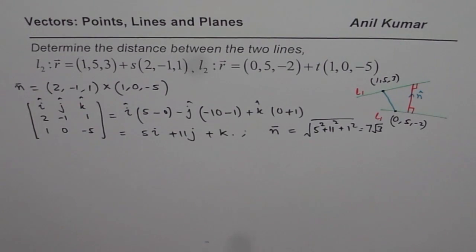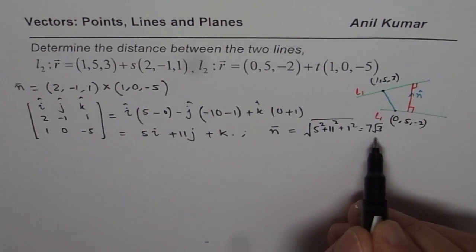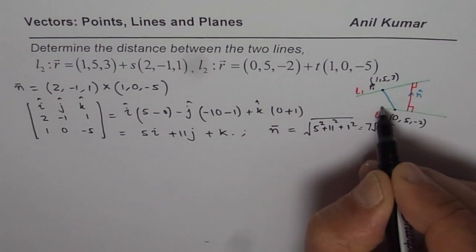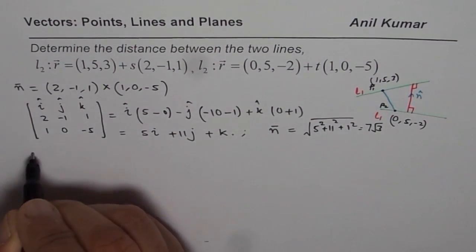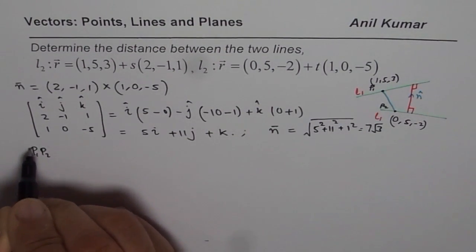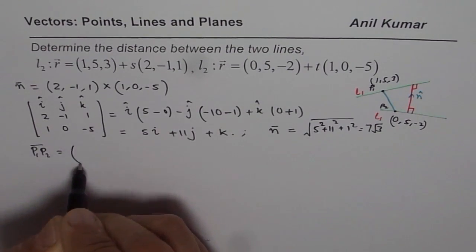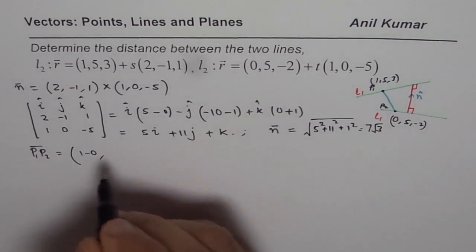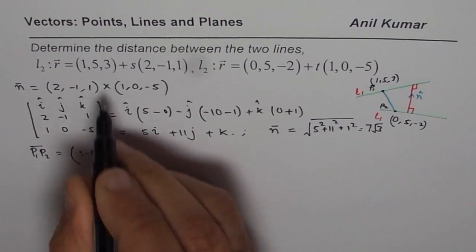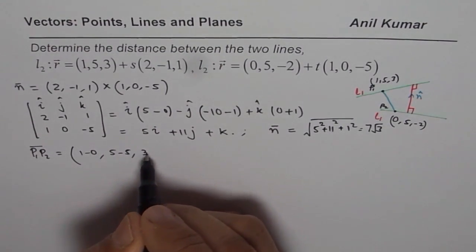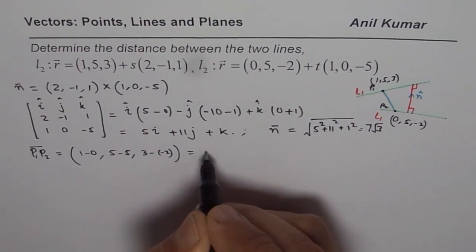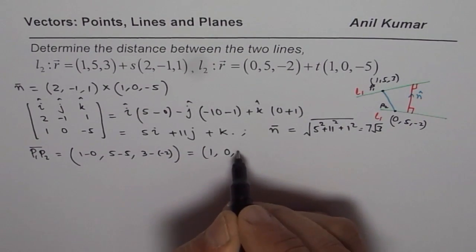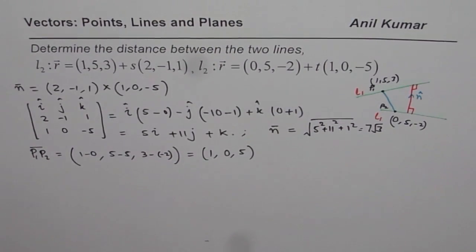We have already found the normal vector and its magnitude. Let us find the vector P₁P₂. Now, P₁P₂ is going to be (1-0, 5-5, 3-(-2)). So, that is (1, 0, 5). So, that is P₁P₂.